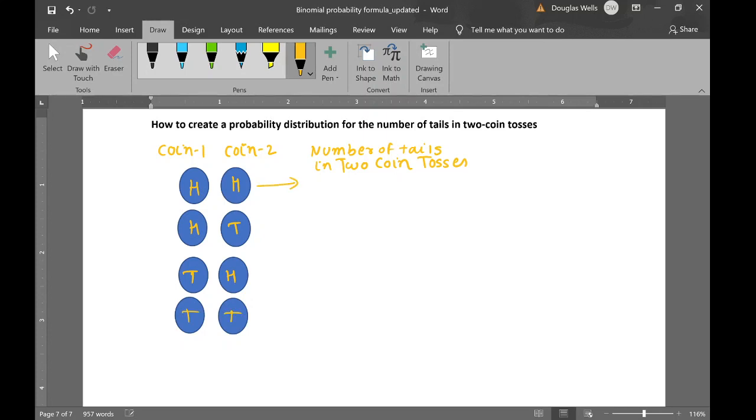So the possible tails, number of tails for the first outcome is zero, second outcome is one, third one is one, and fourth one is two.